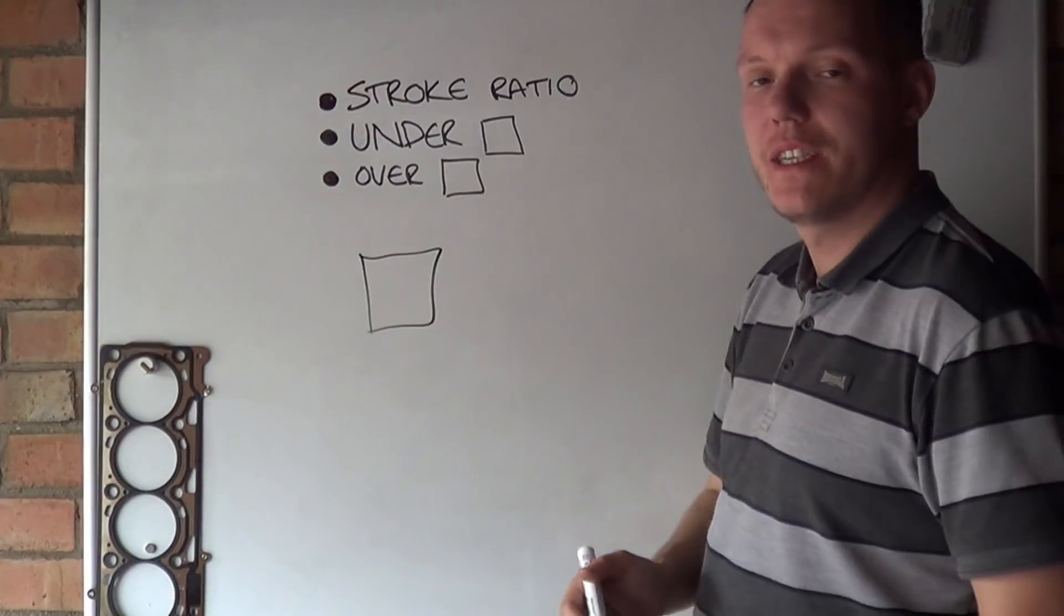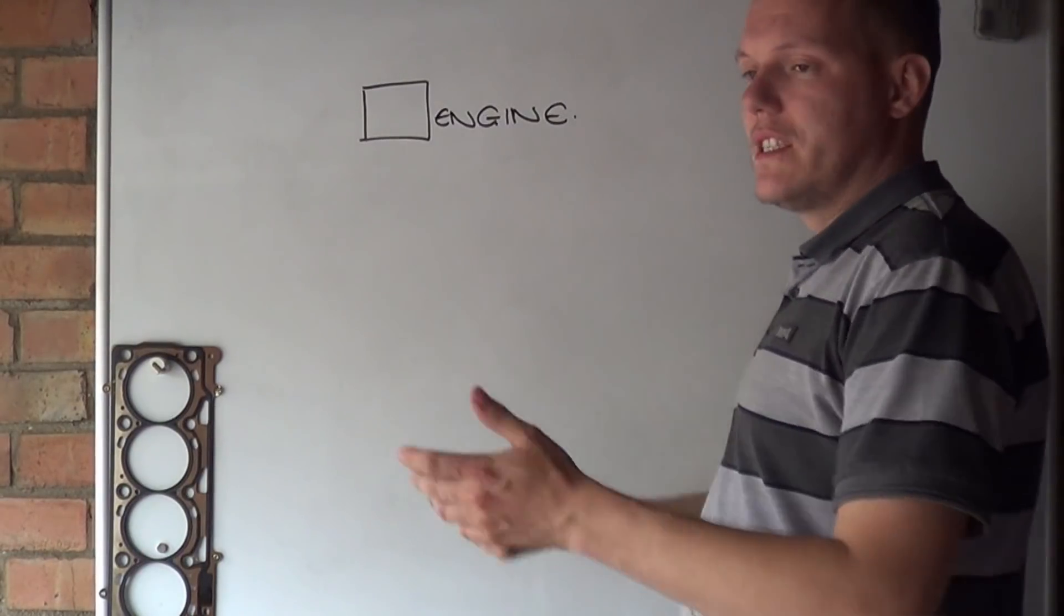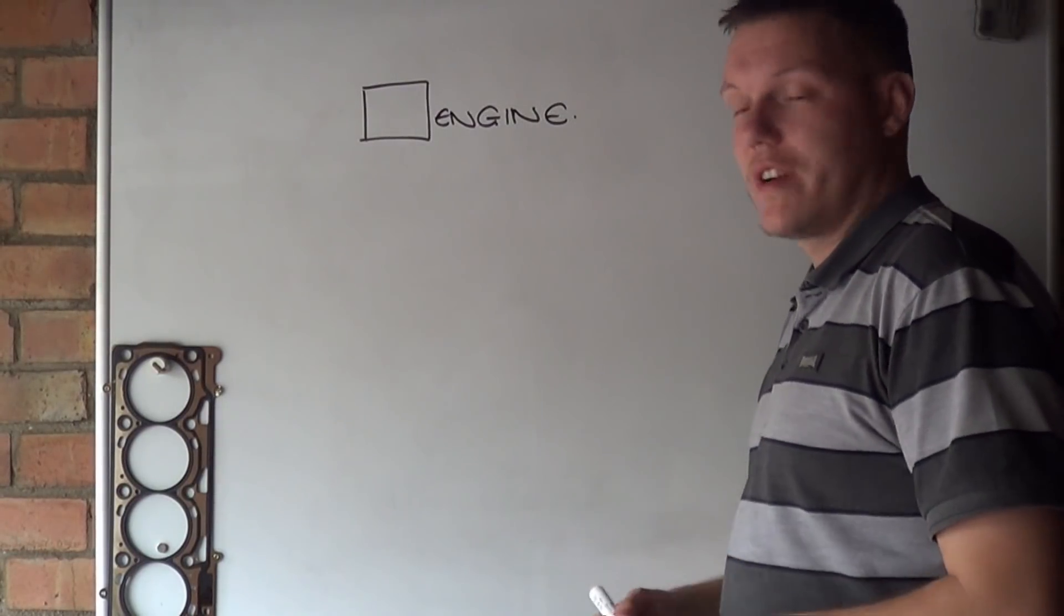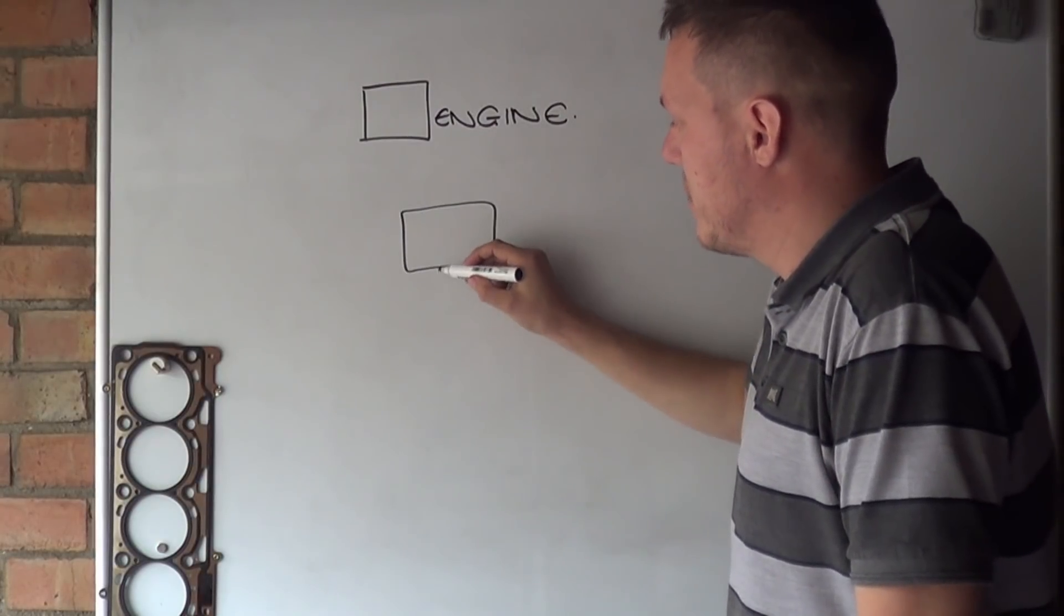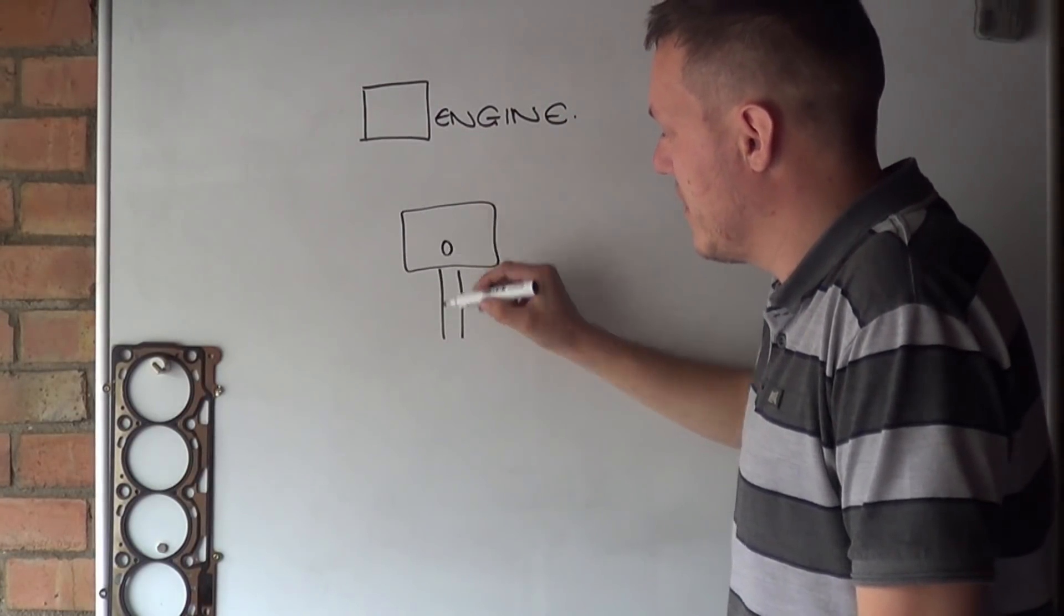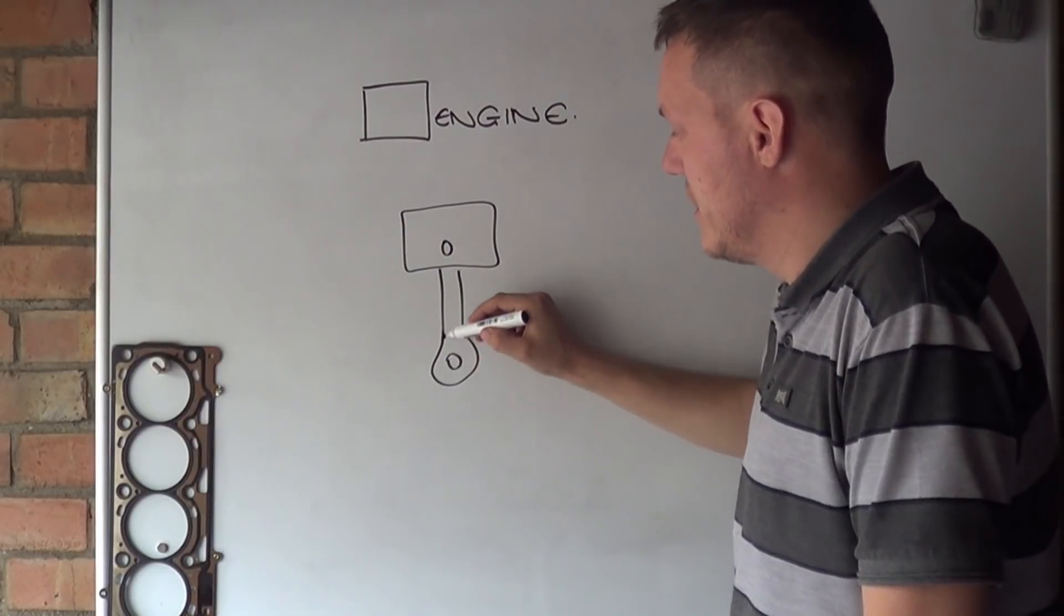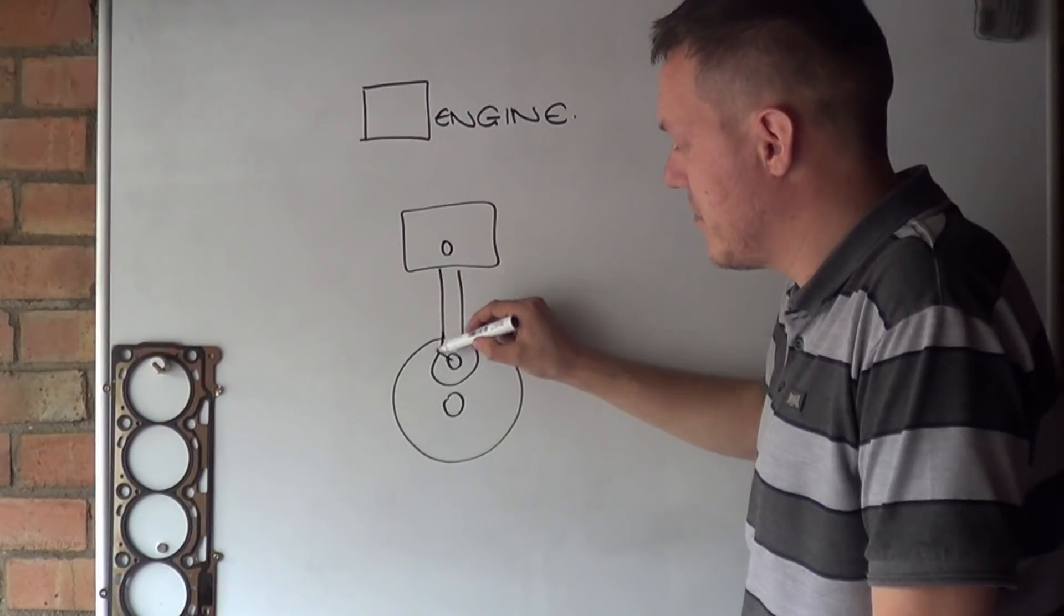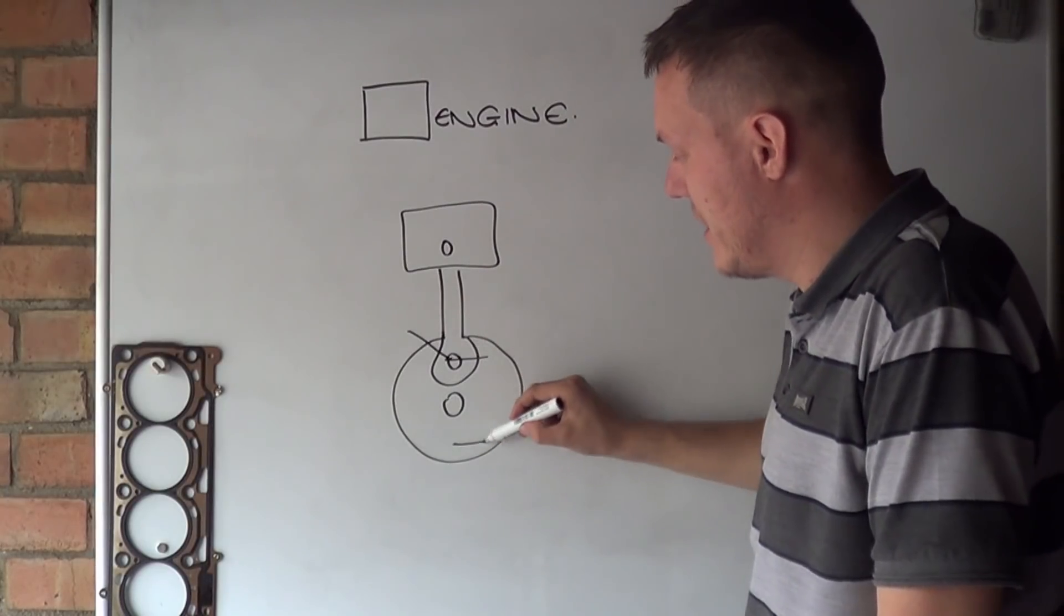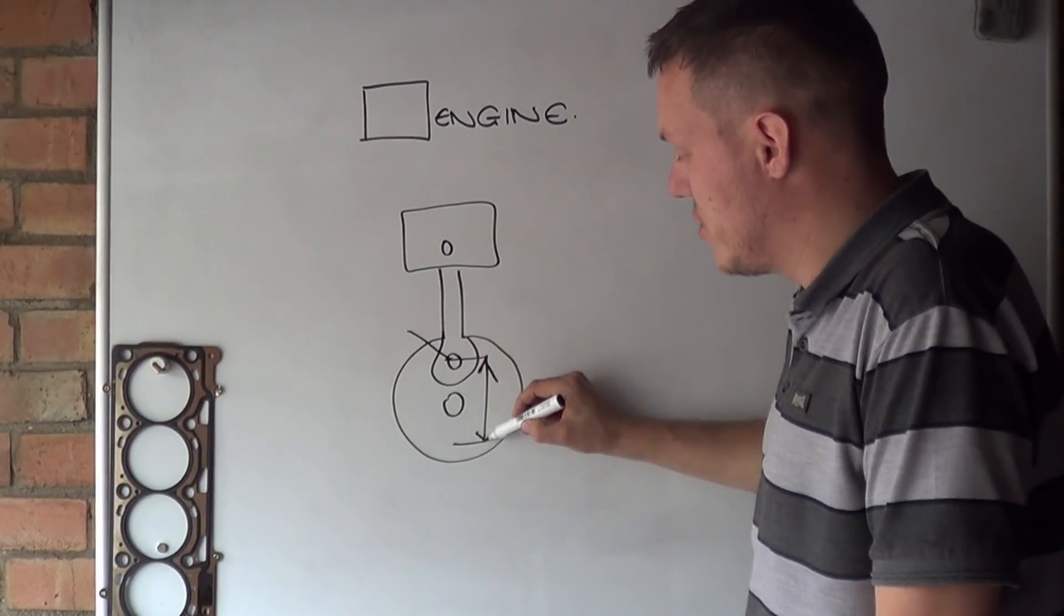So a square engine, and it's the easiest way to describe what a stroke ratio is, is the stroke and the piston diameter. So we have our little piston, we have our crankshaft and our crank pin is here. For it to go from there to there, that is the stroke.